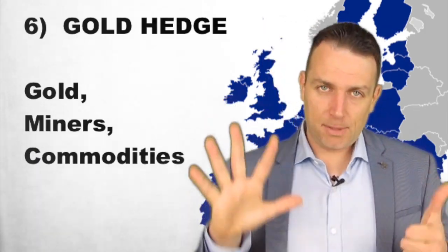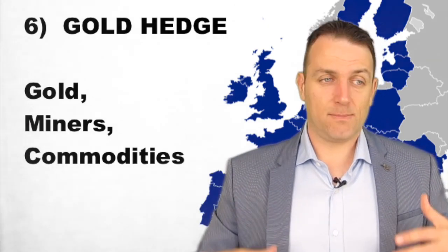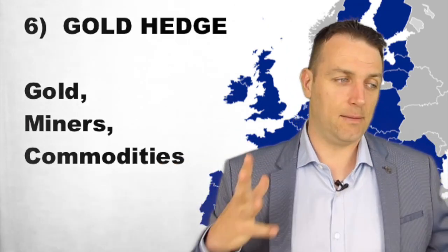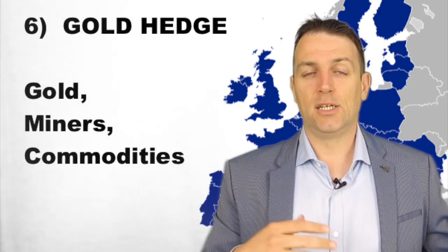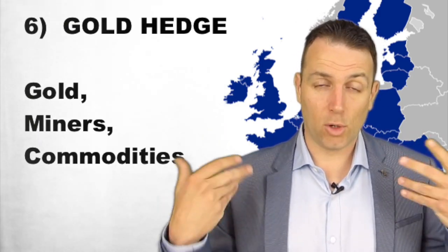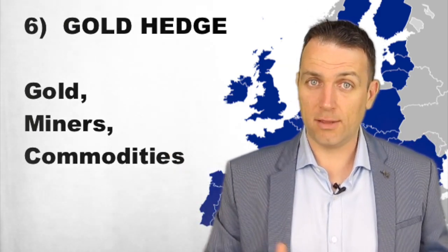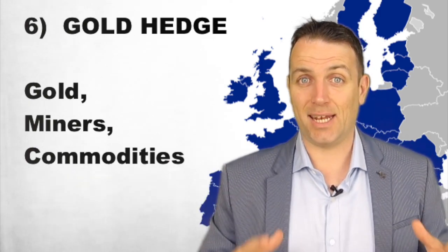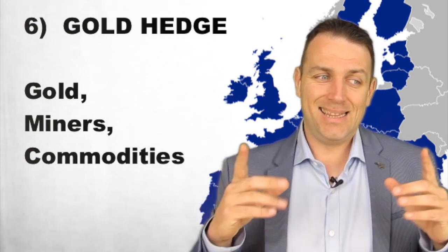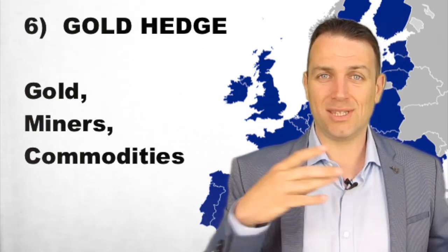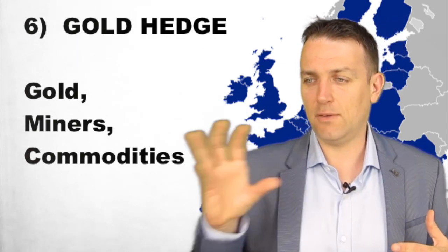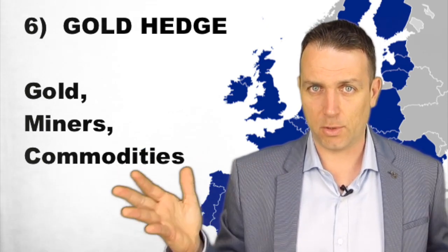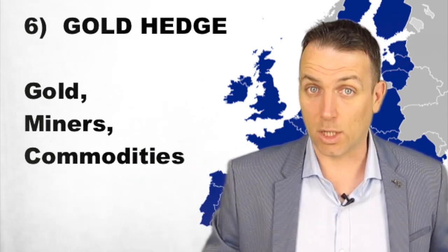Number six: there is populism, high debt levels, high budget deficits as we are seeing in Italy. So if there will be more and more money printing, gold, miners, and commodities might again be a way to diversify. This is more of a hedge — don't expect it to be a core investment. But if you have a part of it in your diversified portfolio from Europe, you'll do well no matter what.